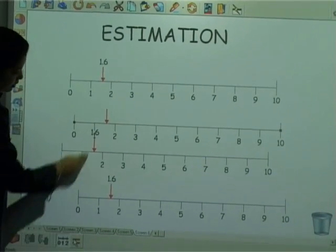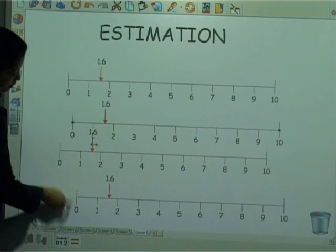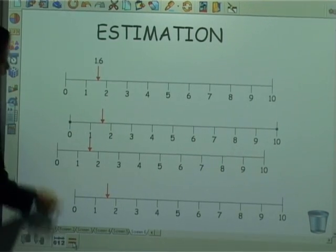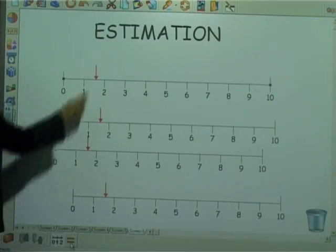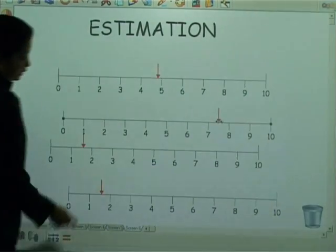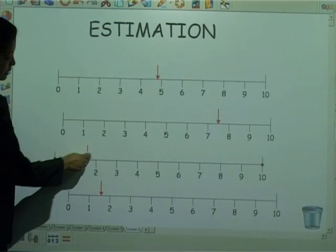What I can do is I can take away all the answers and I move this arrow in different positions for the children to estimate the numbers accordingly.